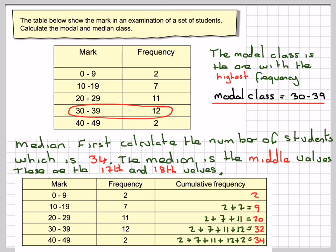The middle values are the 17th and the 18th, which are going to be in here, because up to here we have the 20th value. So the middle values, the 17th and the 18th values, are here. Therefore, the median class will be this one, which is 20 to 29.